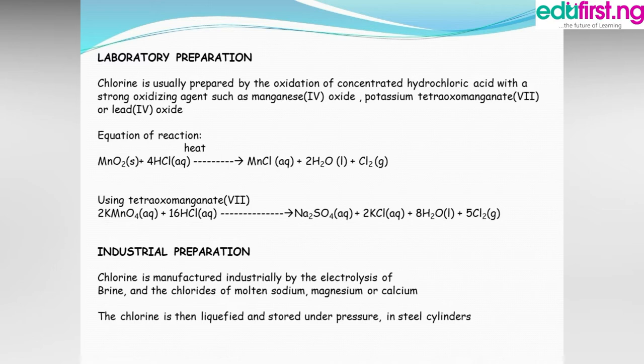We have the equation of reaction where manganese dioxide is used as a strong oxidizing agent with concentrated hydrochloric acid to give manganese chloride, water, and chlorine gas. When KMnO₄ is used as the oxidizing agent with concentrated hydrochloric acid, we get potassium chloride, sodium sulfate, eight molecules of water, and five molecules of chlorine gas liberated.